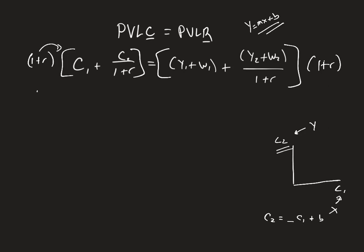As I distribute this through, I now get c1 times 1 plus r plus, well, that's actually going to cancel out with this one, so it's plus c2 equals, same thing. We're going to distribute this through to both things. We're going to get y1 plus w1 times 1 plus r plus, these are going to cancel for that term, and we get y2 plus w2.